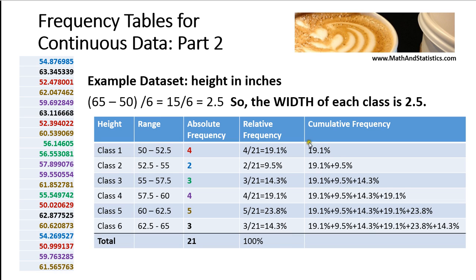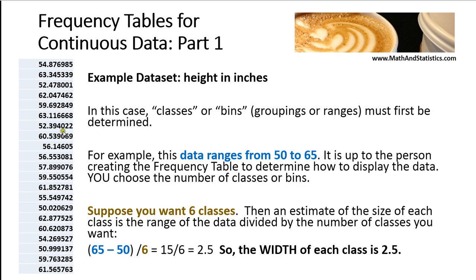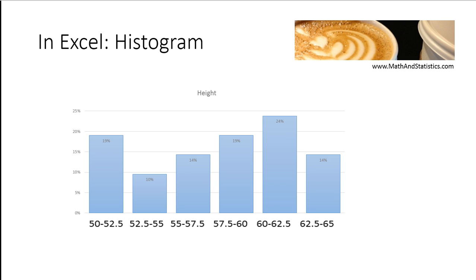The cumulative frequency works the same way. I start with class 1, then add on the second class, then the third, fourth, and so on. Once I add all the groups together, they add to 100%. In this example, we saw how to create a frequency table for discrete qualitative data for which the categories are already apparent. Then we saw how to create a frequency table for continuous and quantitative data for which you have to create your own categories. Remember, the number of classes or categories is completely up to you. You could have had four or seven.